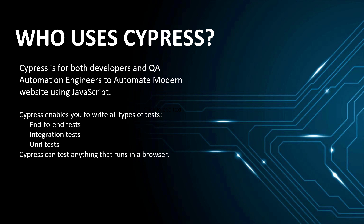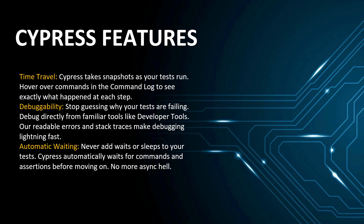The first core feature is time travel. Whenever you execute your scripts in Cypress, it takes screenshots as your test runs and maps those screenshots to your steps. When you go to your executions and click on any step, it will show you a screenshot — both before your action was performed and after your action was performed.